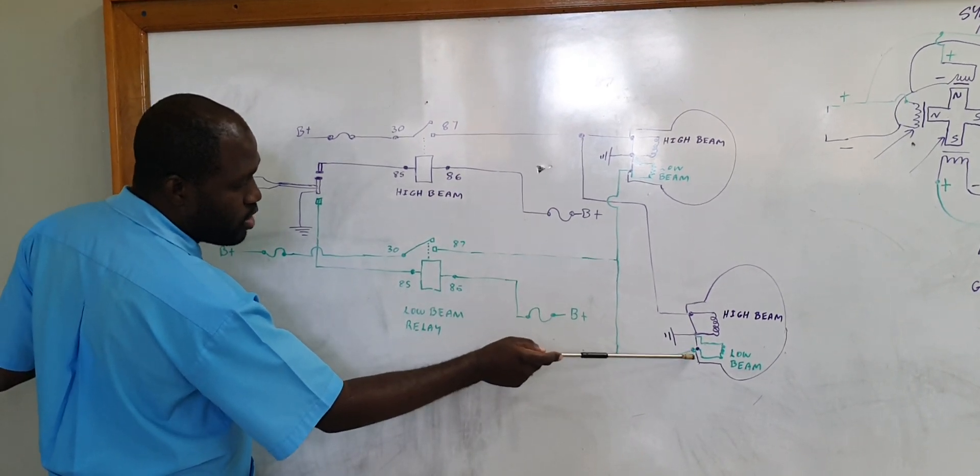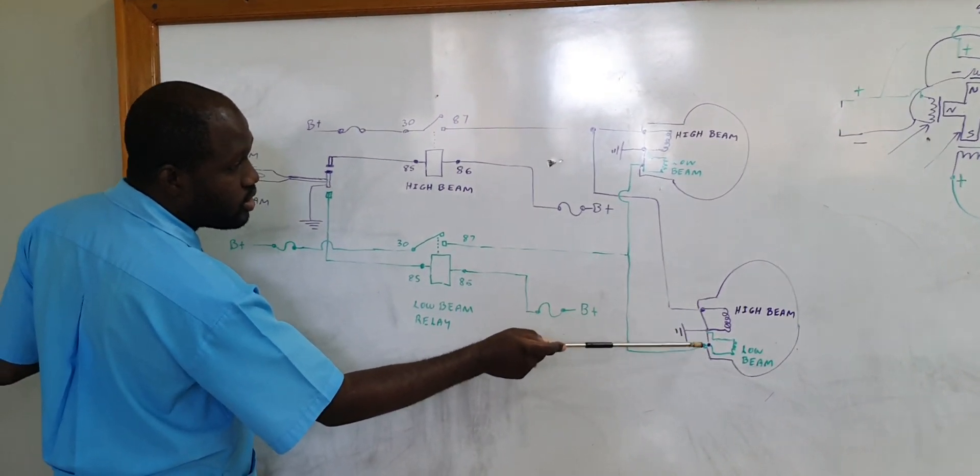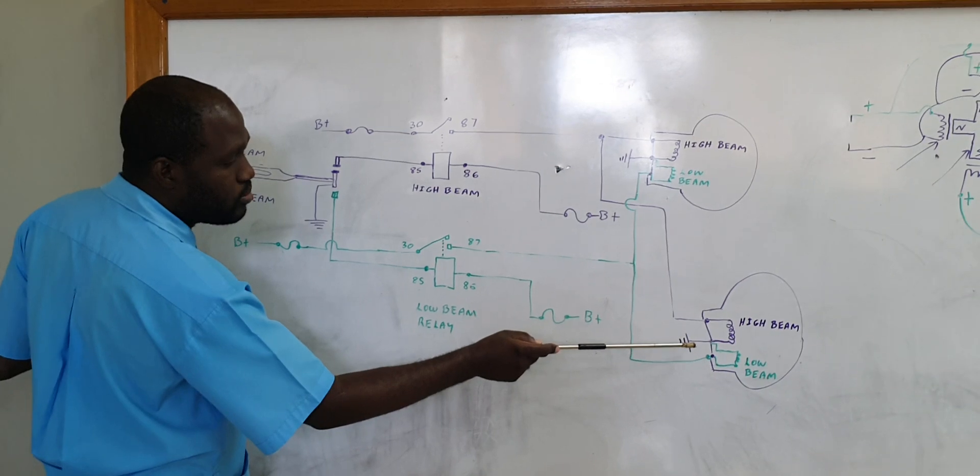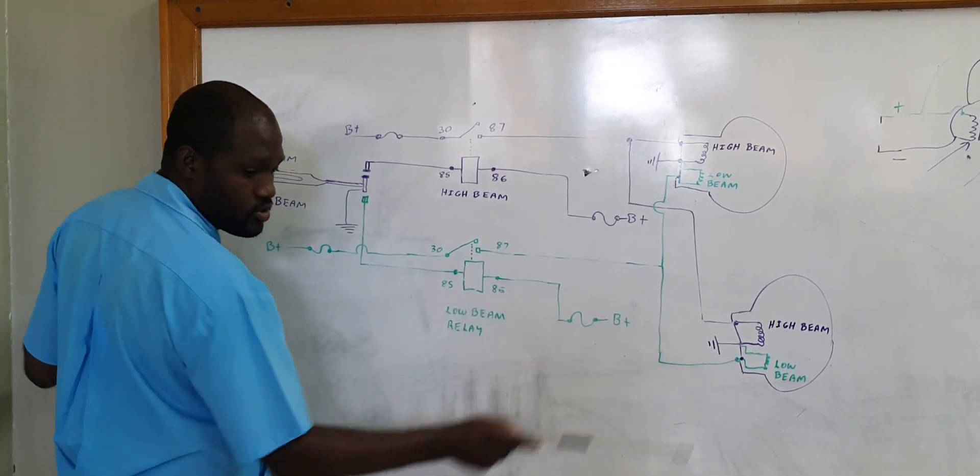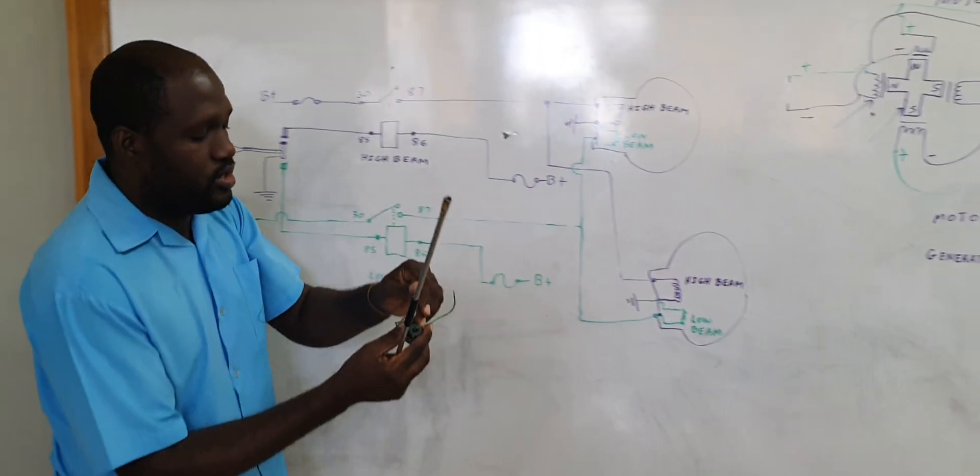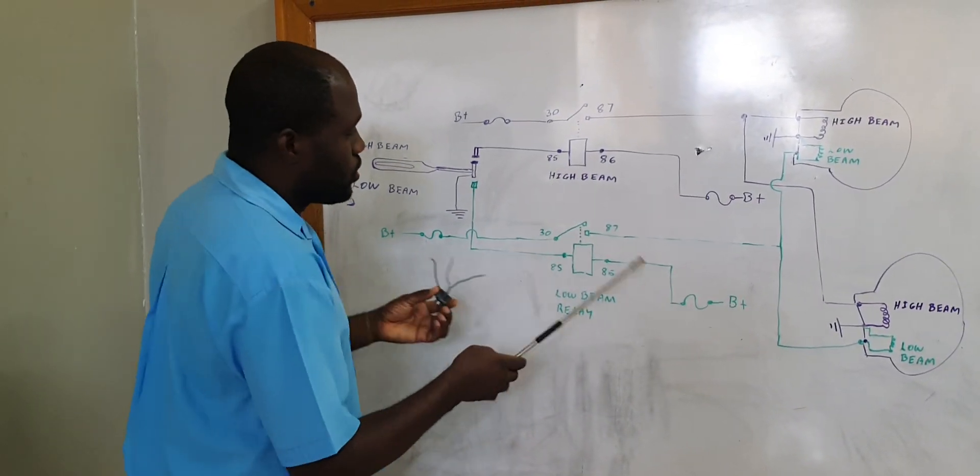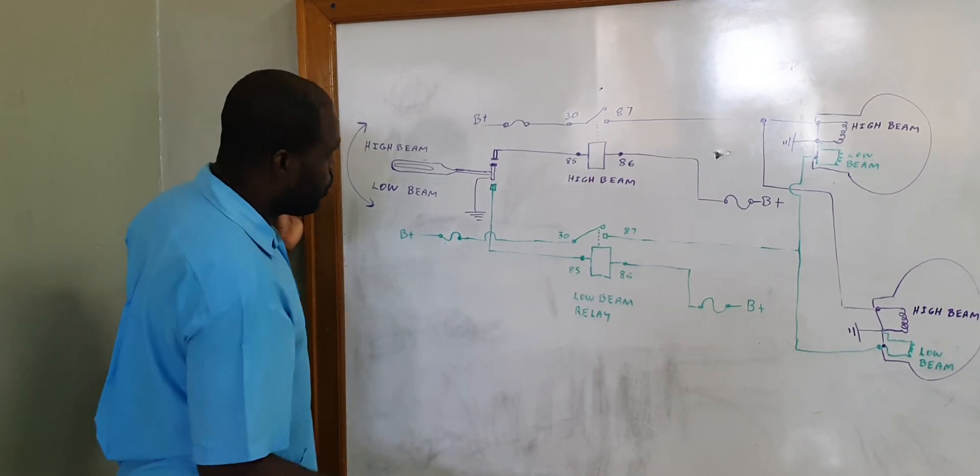Notice there are three prongs to the bulb and the three prongs to the bulb we have a bronze in the center, just like this right here where we have the bronze. So this is how the high beam work.